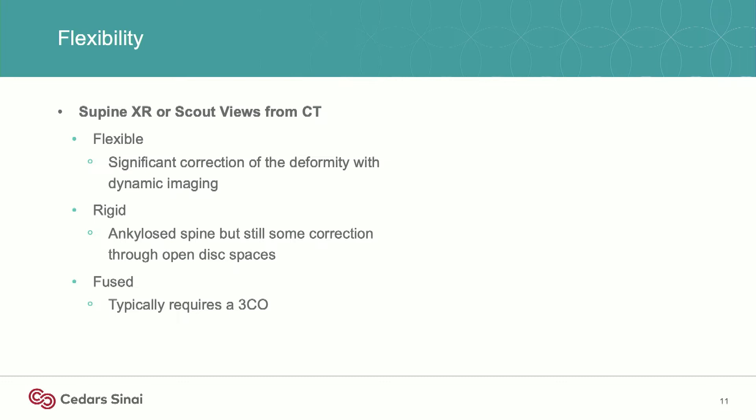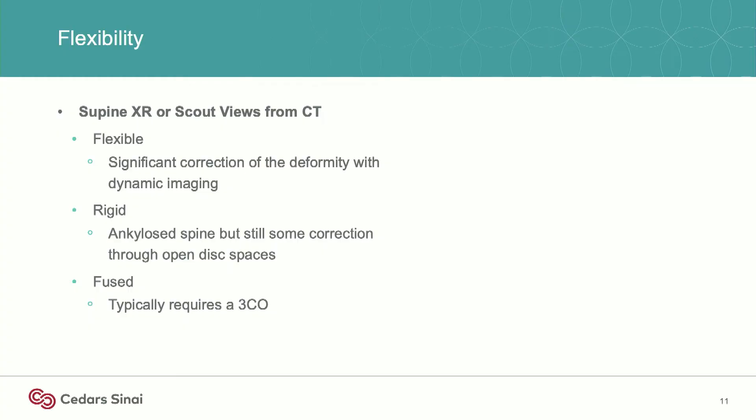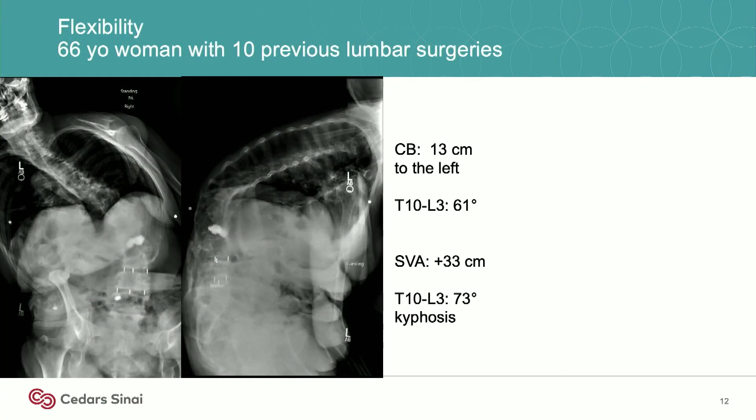In general, once you loosen things up posteriorly, if the disc space isn't fused — with the viscoelastic properties letting the spine sag — you can get a lot of the correction you need even in a very rigid spine. But if a patient is fused over enough levels where you can't work around the fused segments to get your correction, typically those are the cases where you need a three-column osteotomy.